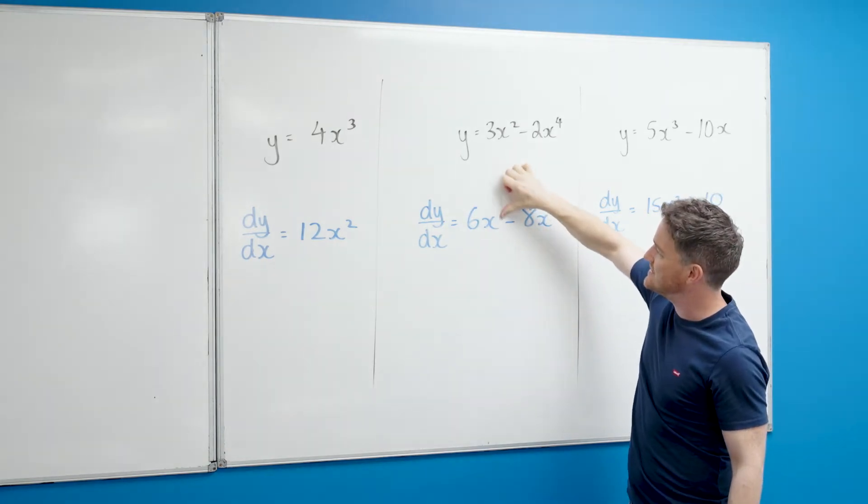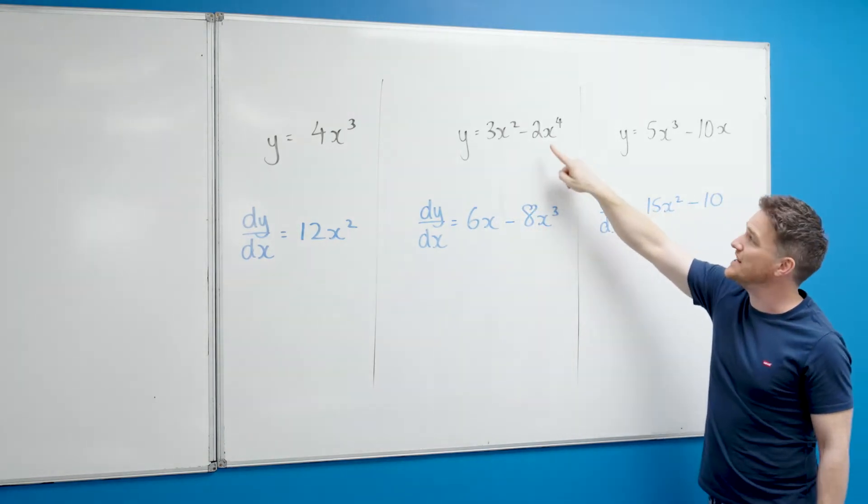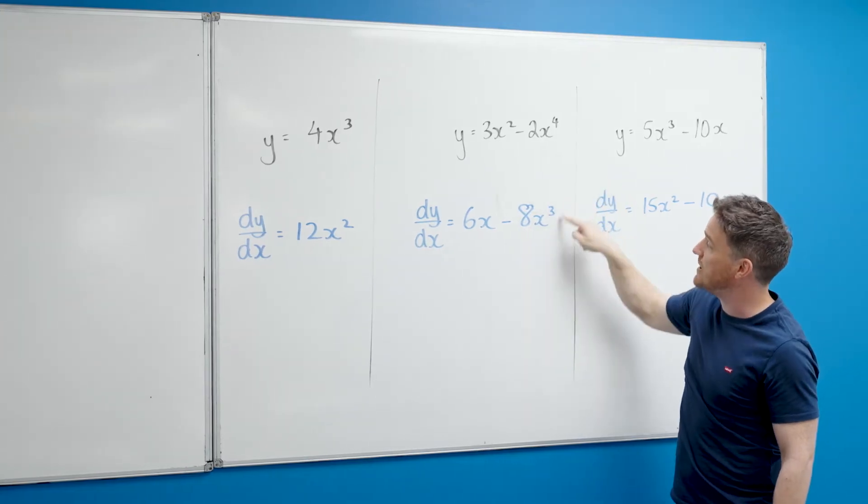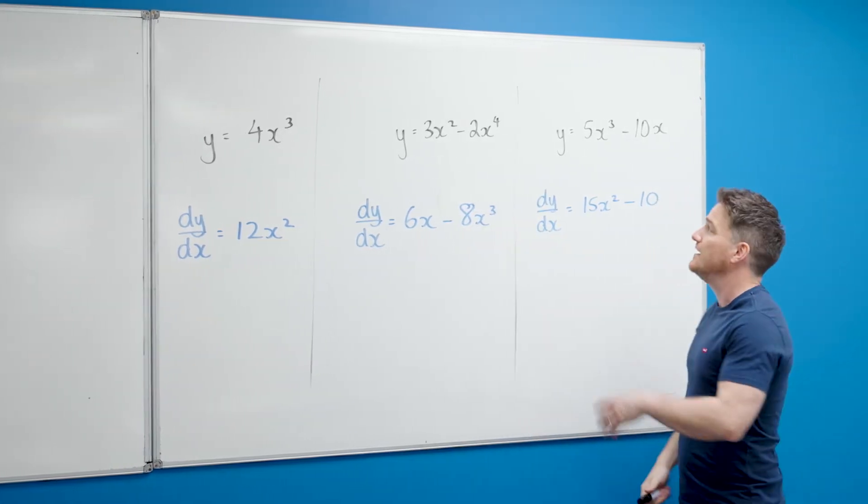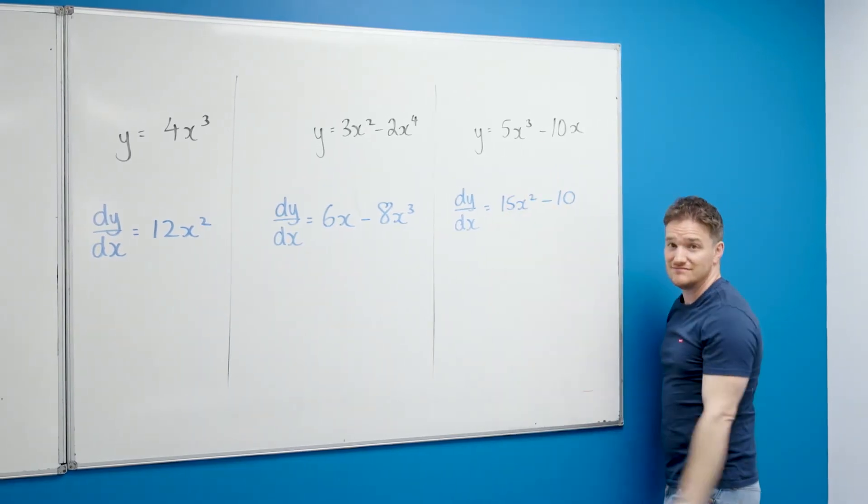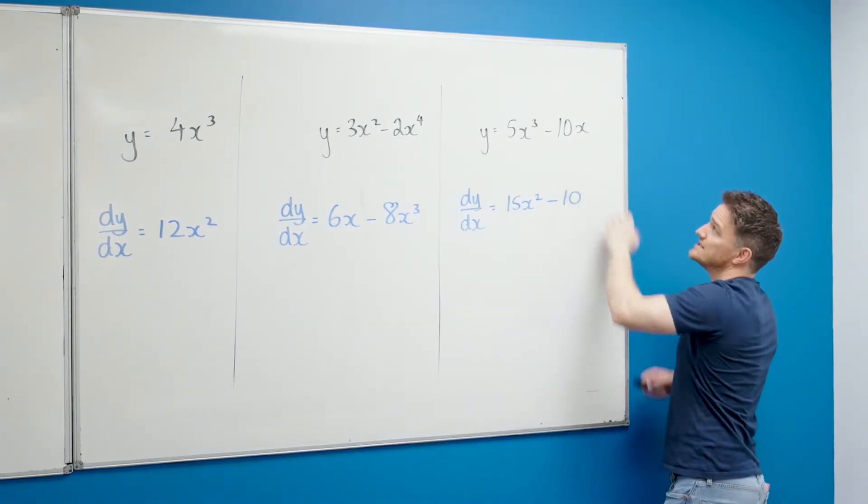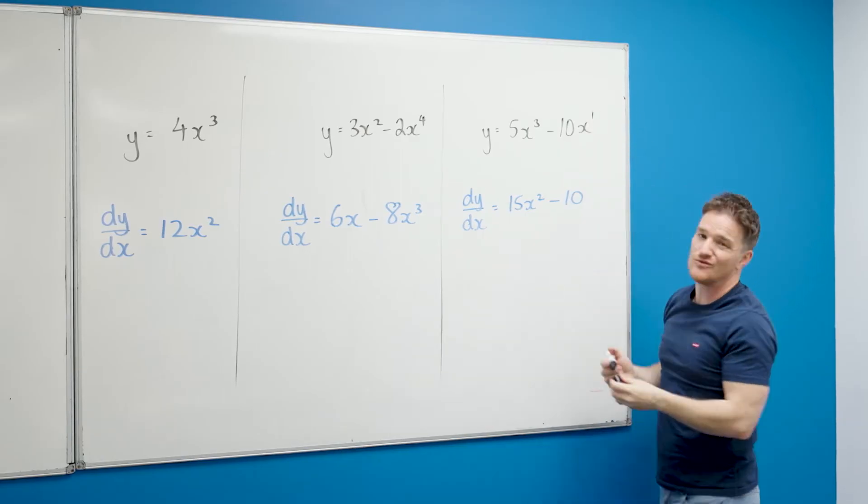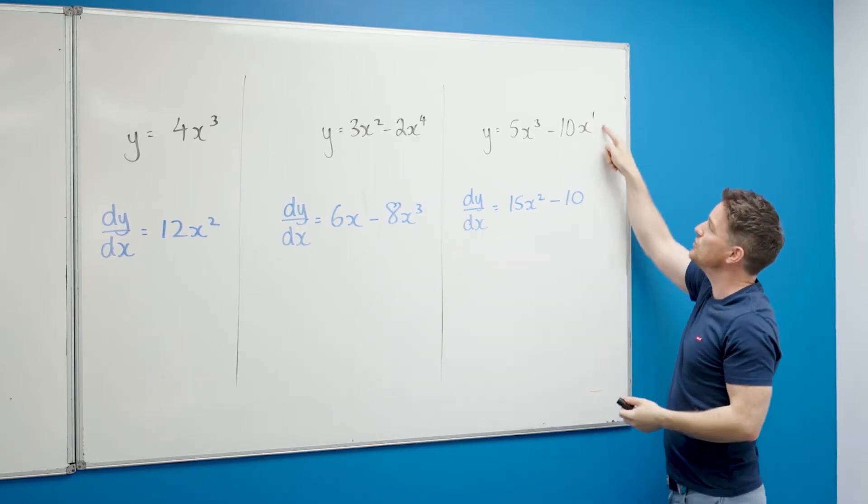Here we do 4 by negative 2, which is negative 8, and drop the power by 1. Over here, 3 by 5 is 15, drop the power by 1—x squared. And here this is to the power of 1, which is again not written because we don't tend to write it. 1 by 10 is minus 10, drop the power to 1—it would be x to the 0.